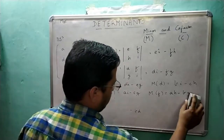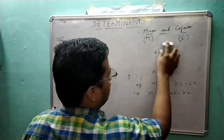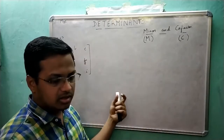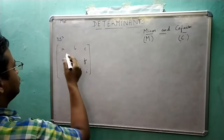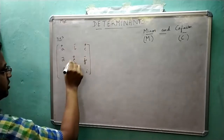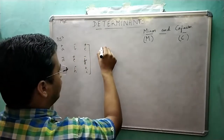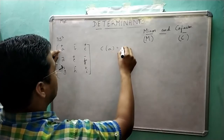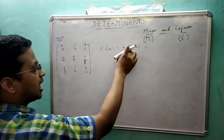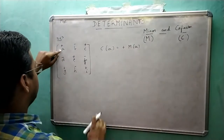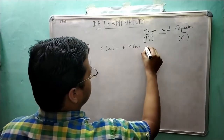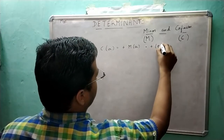Now let us proceed to co-factors. The co-factor is the value of the minor of that element along with the associated sign. As you know, the sign pattern for the matrix is: plus, minus, plus / minus, plus, minus / plus, minus, plus. So the co-factor of A equals plus times the minor of A — and since the minor of A is E×I minus F×H, the co-factor of A is +(E×I − F×H).